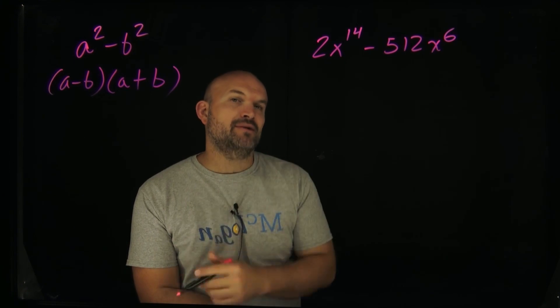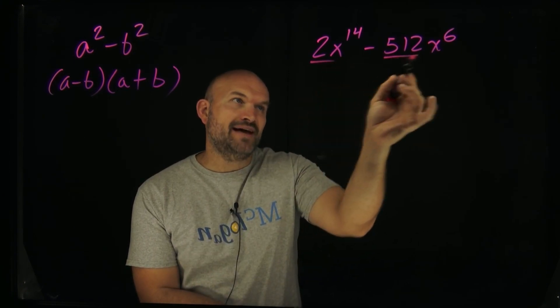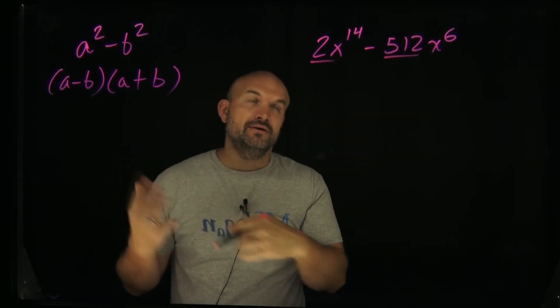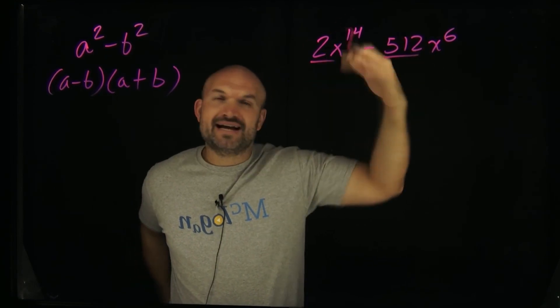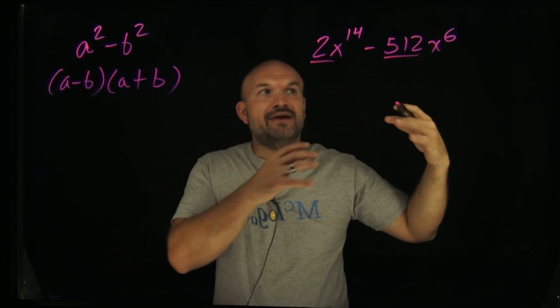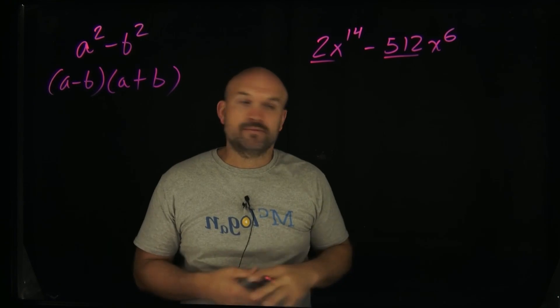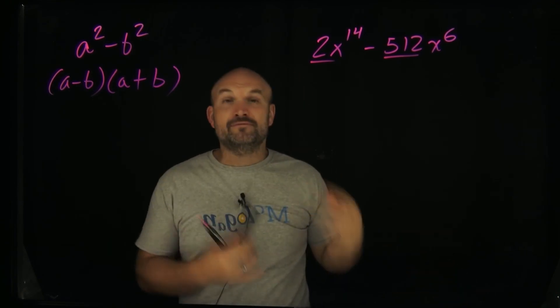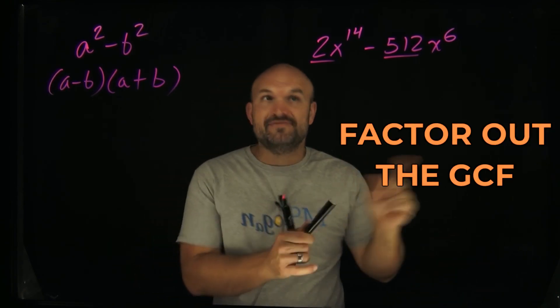So then what I'm going to do is say, well, there's another thing I recognize. That has a 2 and that is even, so I can factor out a 2. And they both have x raised to a power, so I can factor out a common x term raised to a certain power. Therefore, first thing I'm going to do before I get to this is factor out the GCF.